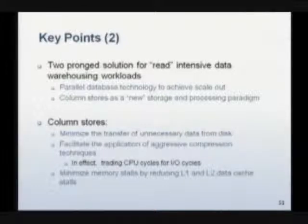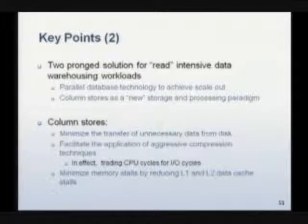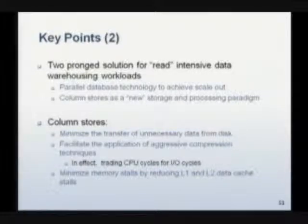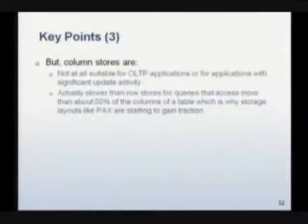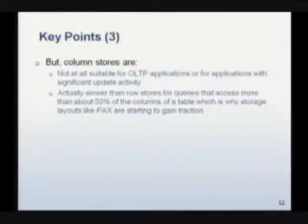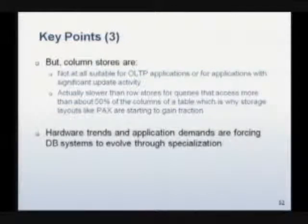Column stores are nice because — remember that little tiny pipe coming out of the water tower, which is the disk drive — they minimize the transfer of unnecessary data from disk. They facilitate the application of really aggressive compression techniques, trading CPU cycles for I/O cycles. We've got CPU cycles to burn because the CPUs are sitting idle a lot of the time. They also help reduce memory stalls. However, they will not work for OLTP applications or any application where you update a lot in place. If it's mainly appends, they can be made to work very well. There are some hybrid storage models beginning to gain traction.